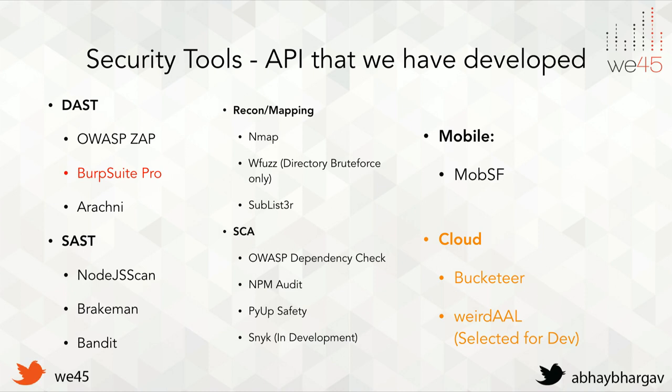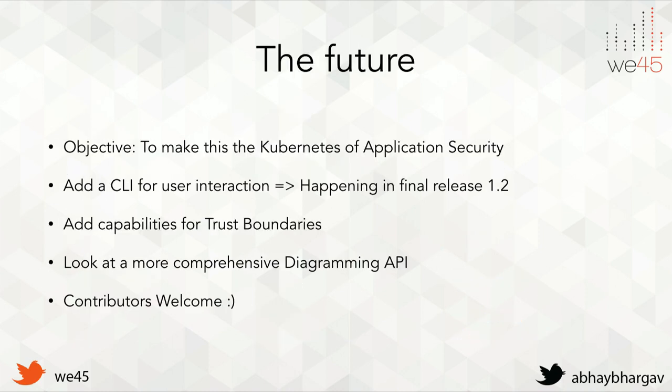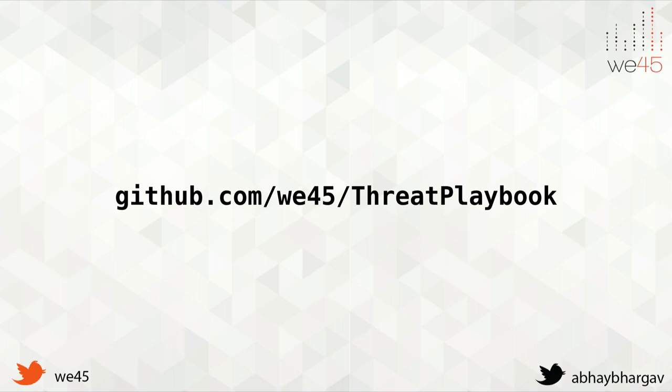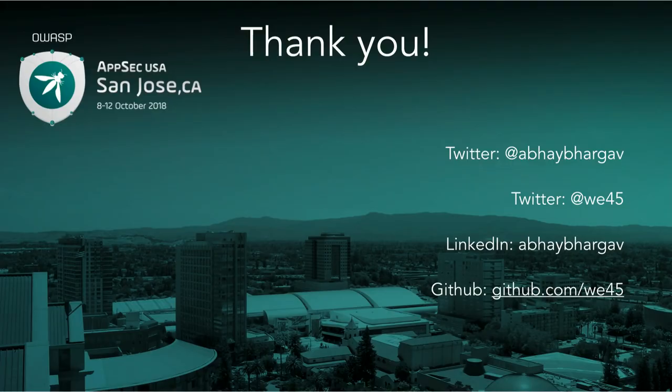The future: we want to make this the Kubernetes of application security — a nice orchestrator for threat models, automation, and everything you'd want from an application security program. Release 1.2 is coming up with a CLI, trust boundaries for diagramming, and a better diagramming API — currently using Mermaid.js but want something better. Contributors are welcome; it's in Python. This is the GitHub URL and my Twitter. Thank you so much, I hope this was beneficial.